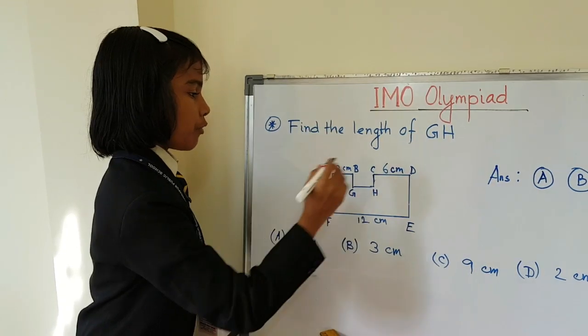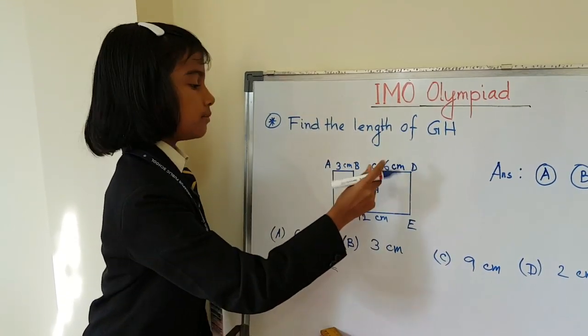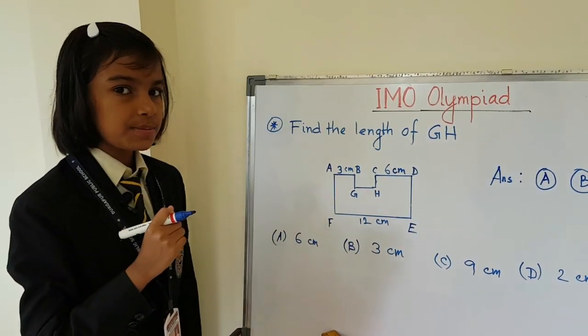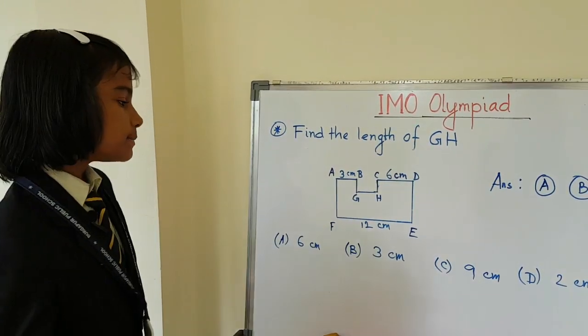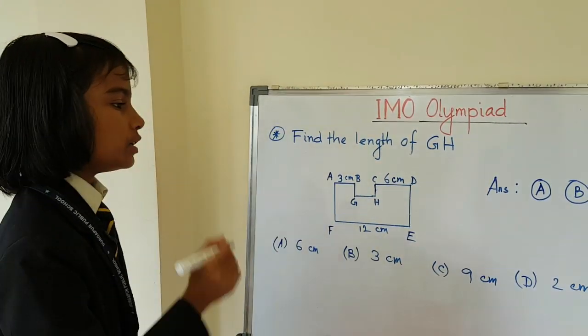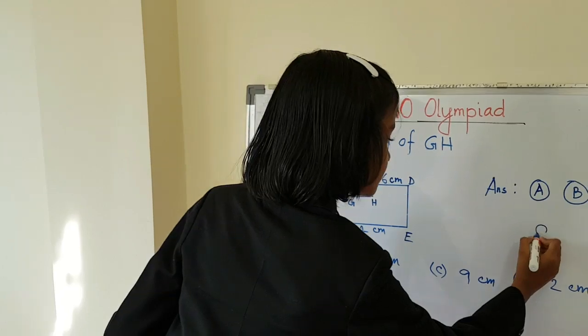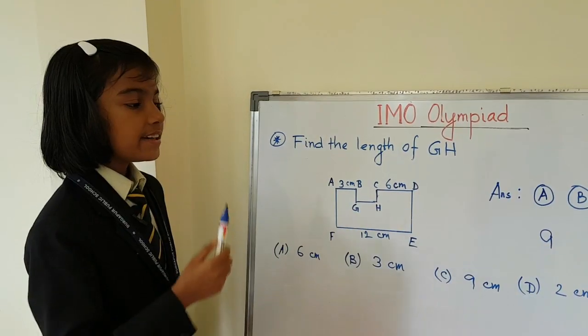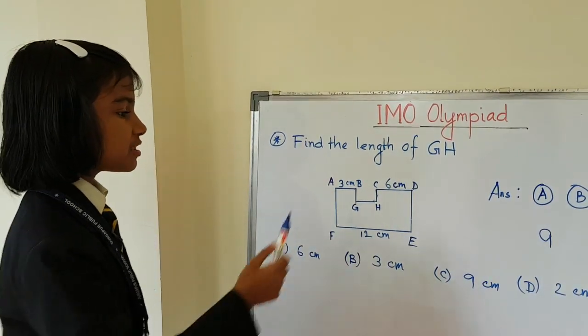First what we have to do, we have to add these two numbers: 6 cm plus 3 cm, what is it? 9 cm. So it is 9 cm. Then what we have to do, we have to subtract 9 from 12 cm.